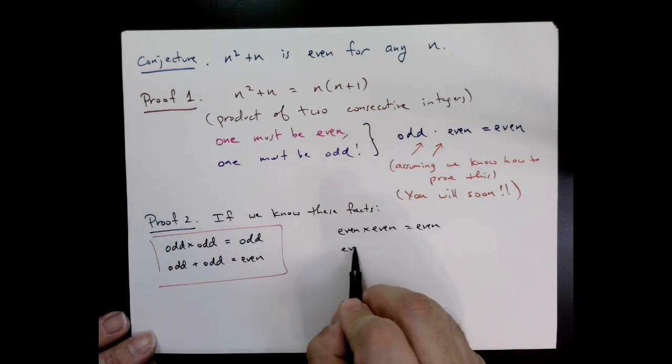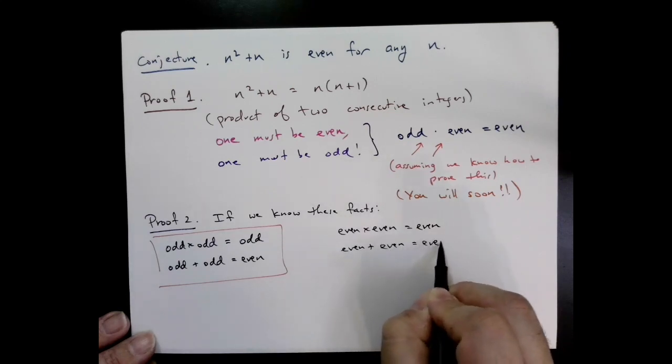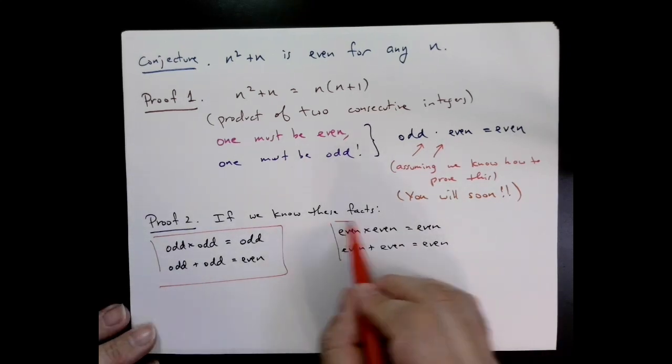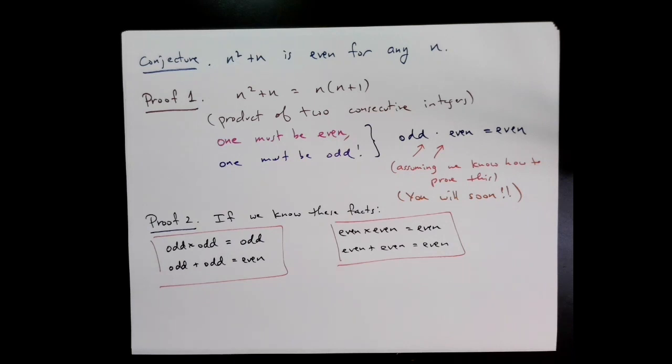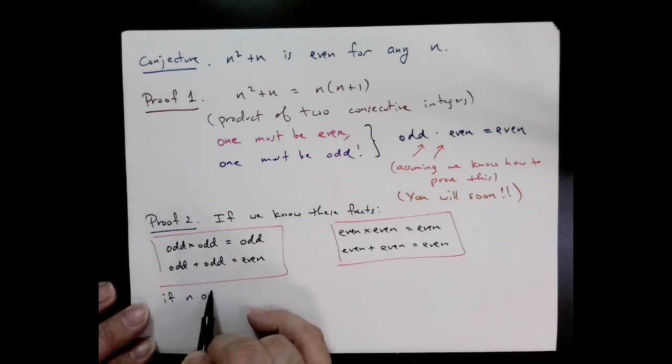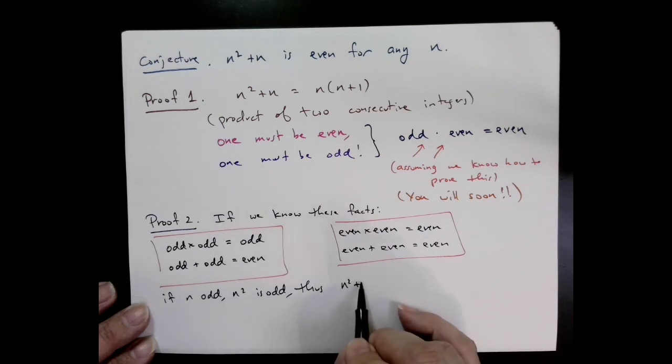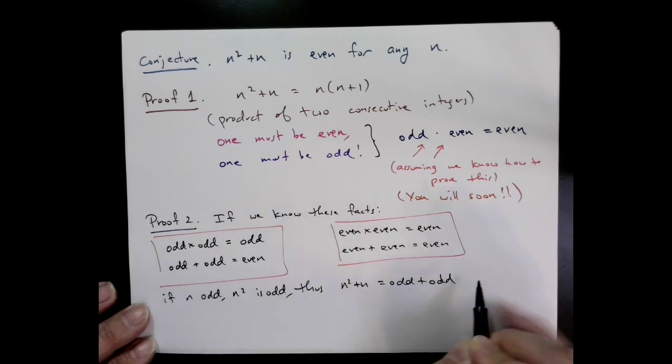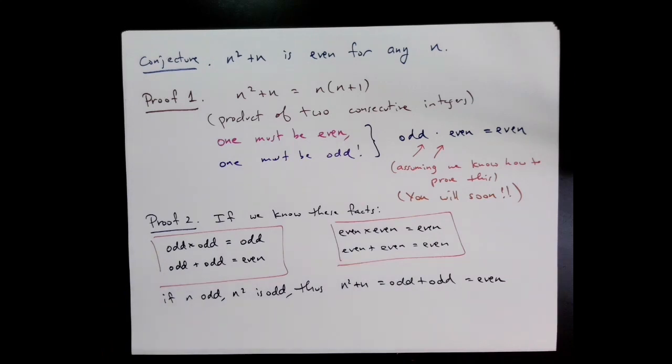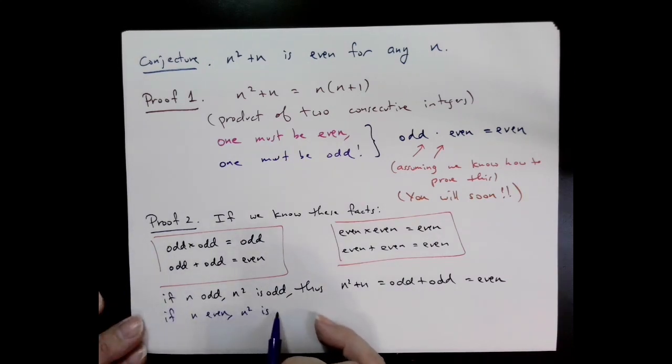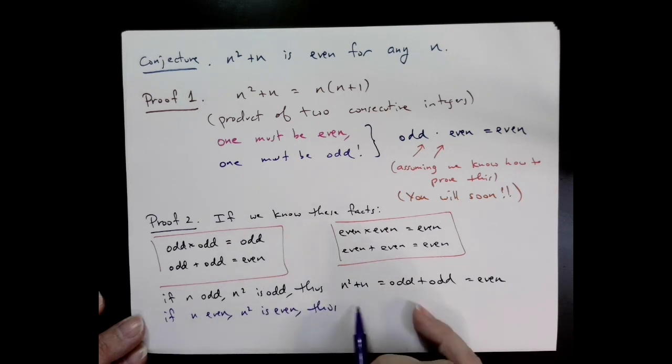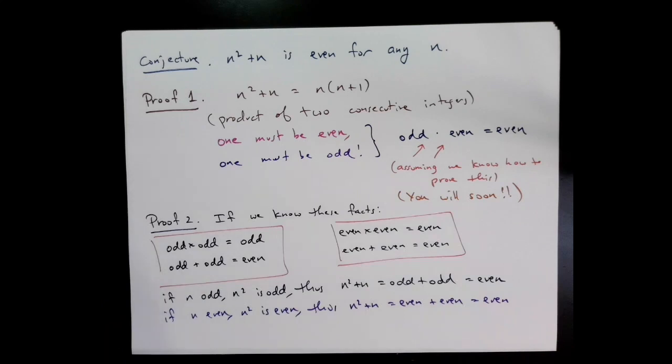Let's go through the argument. This is sometimes called a proof by cases because n can be odd or even. If n is odd, n² is odd because odd times odd is odd, and then n² + n is odd plus odd, which is even. Similarly, if n is even, then n² is even because even times even is even, therefore n² + n is even plus even, which is also even. Either case gives us an even number—that's also a valid proof.